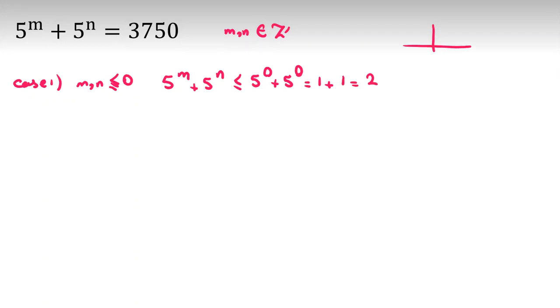The diagram of 5^x is an increasing function, which justifies why both non-positive values give such a small sum.